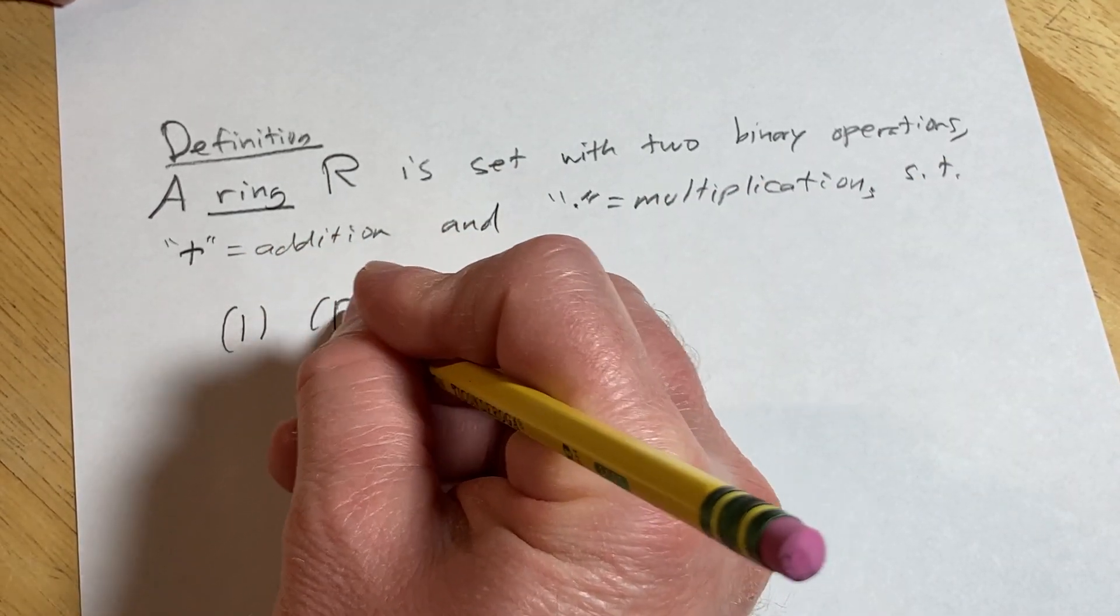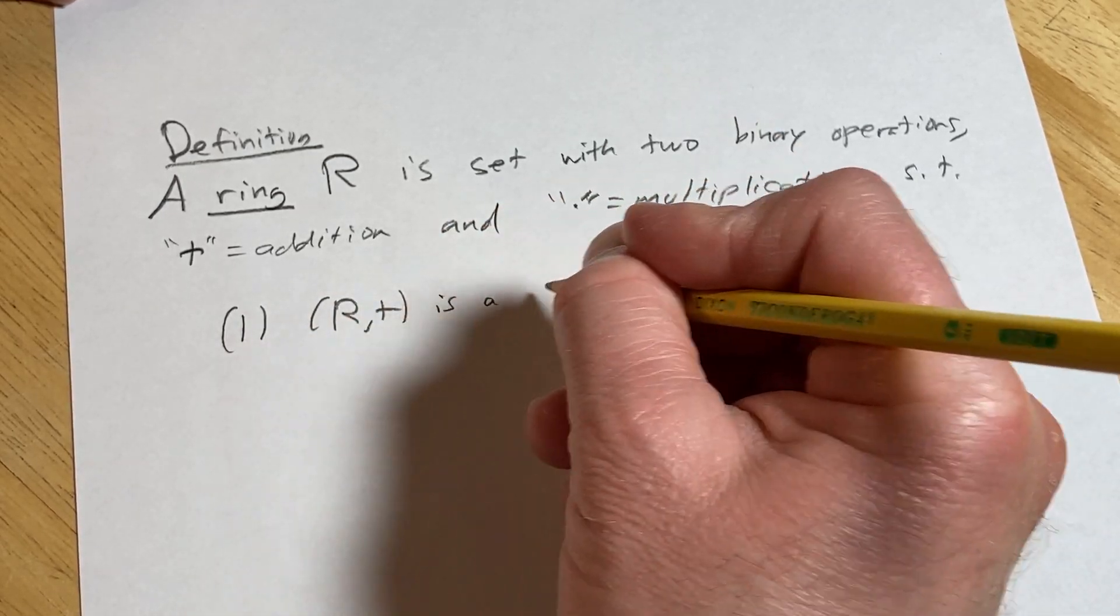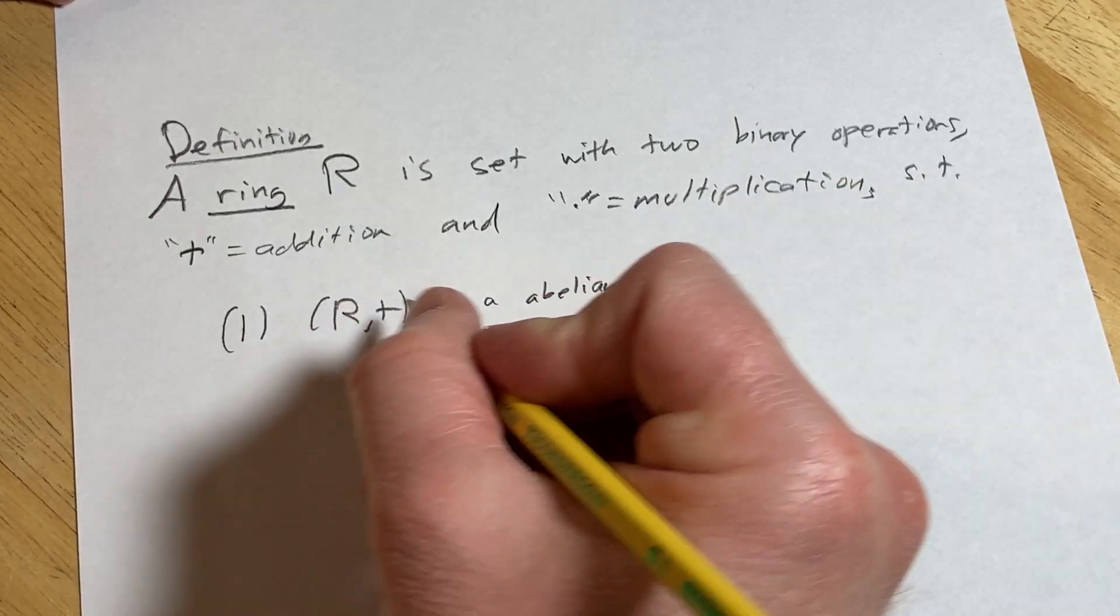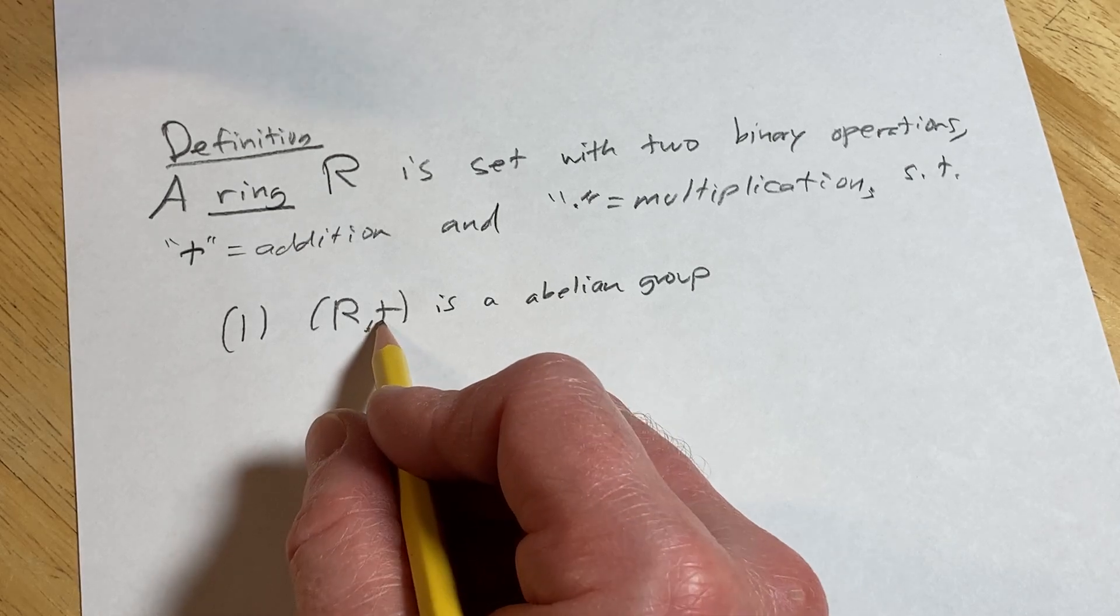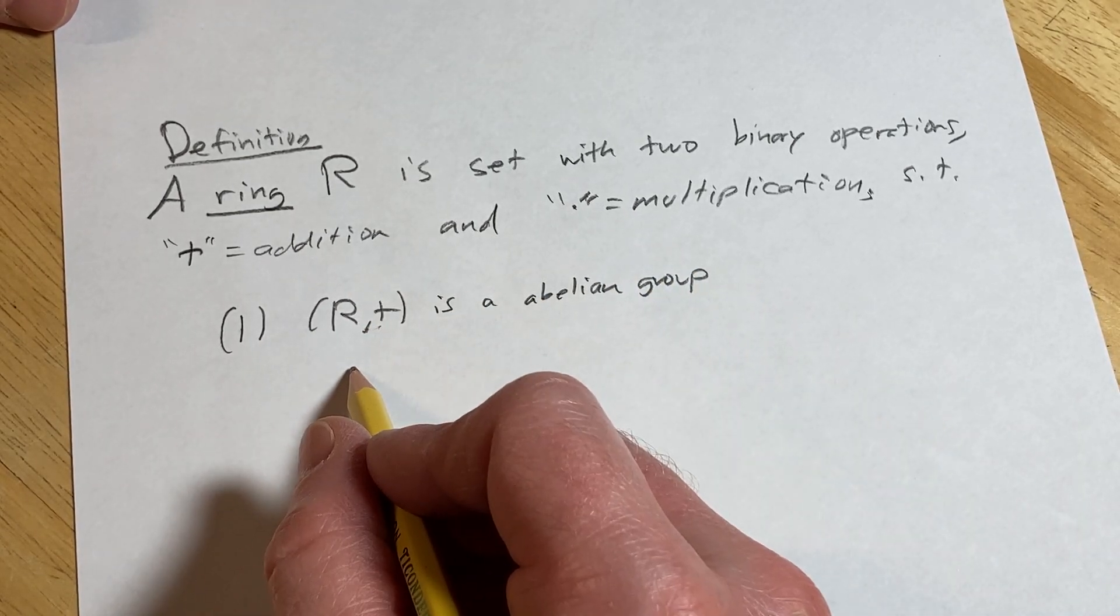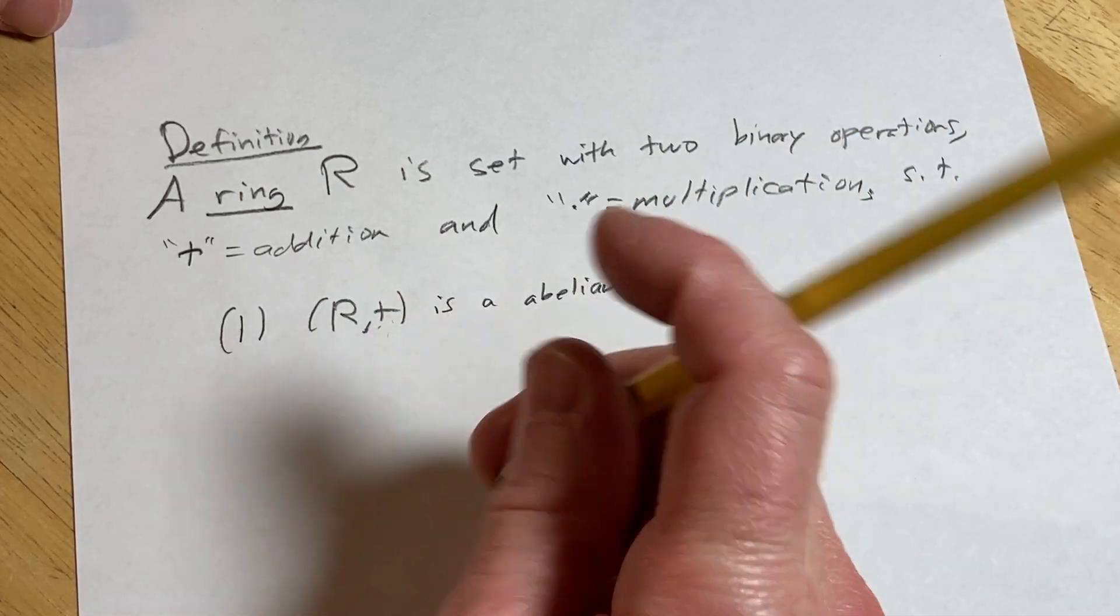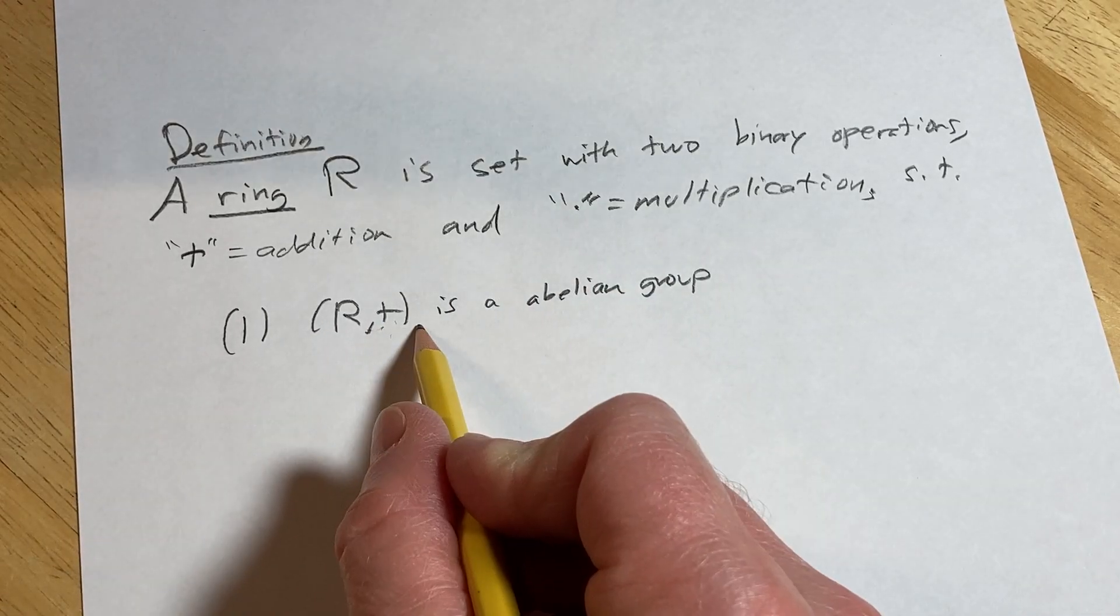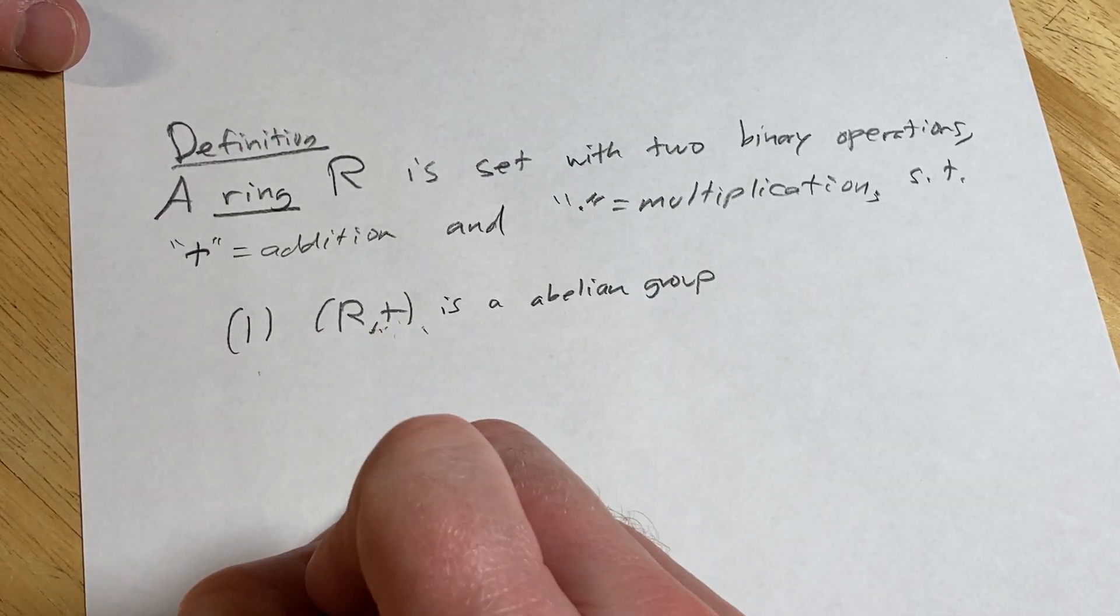One: R under addition is an abelian group. Remember abelian just means that the operation is commutative. So it's a group, it's got a binary operation which is called addition, which is commutative. That's what the abelian part means. It has an identity element. It's associative, and every element has an inverse. So it's a group. It's not empty, but the existence of identities actually guarantees that. So that's an abelian group.